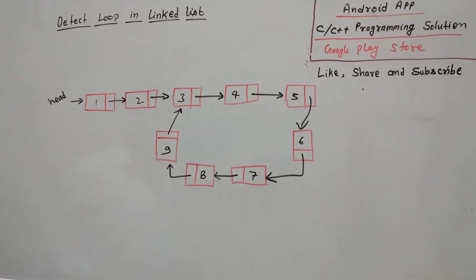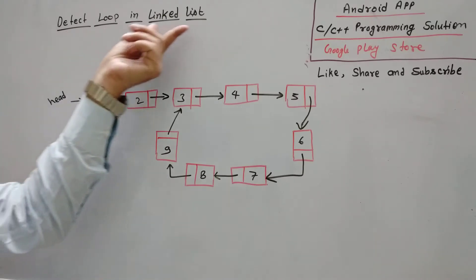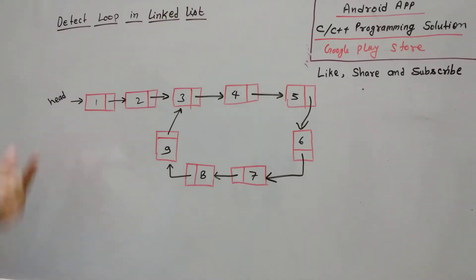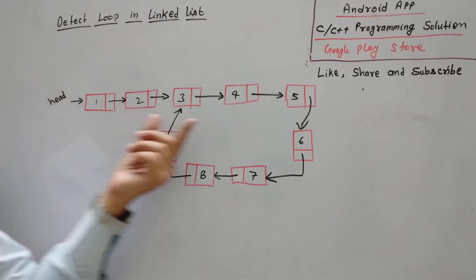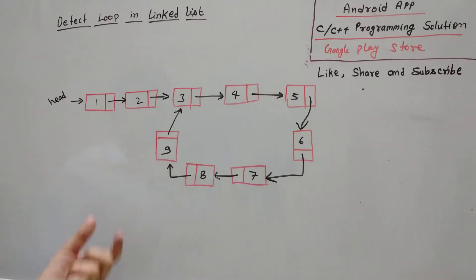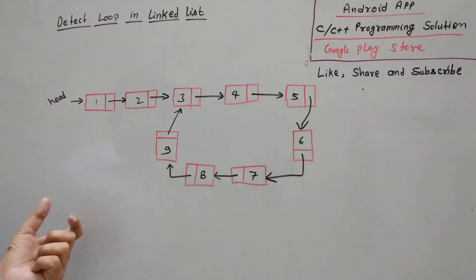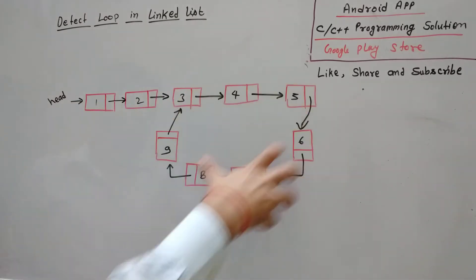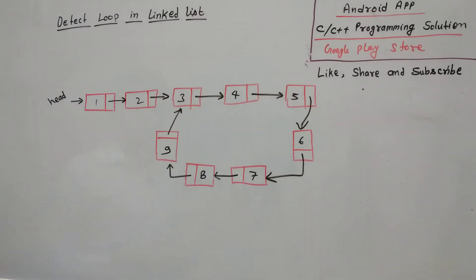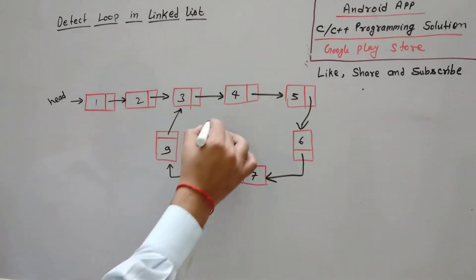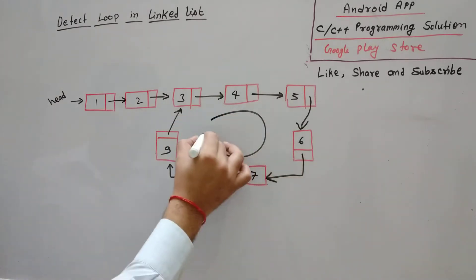Hello guys, today I am going to discuss a very important question for your interview and placement - that is detect loop in a linked list. So how to detect a loop in a linked list? We have a linked list and we have to detect whether a loop exists or not. It might be possible that all the nodes are in a loop, or it might be possible that only some of the nodes form a loop.